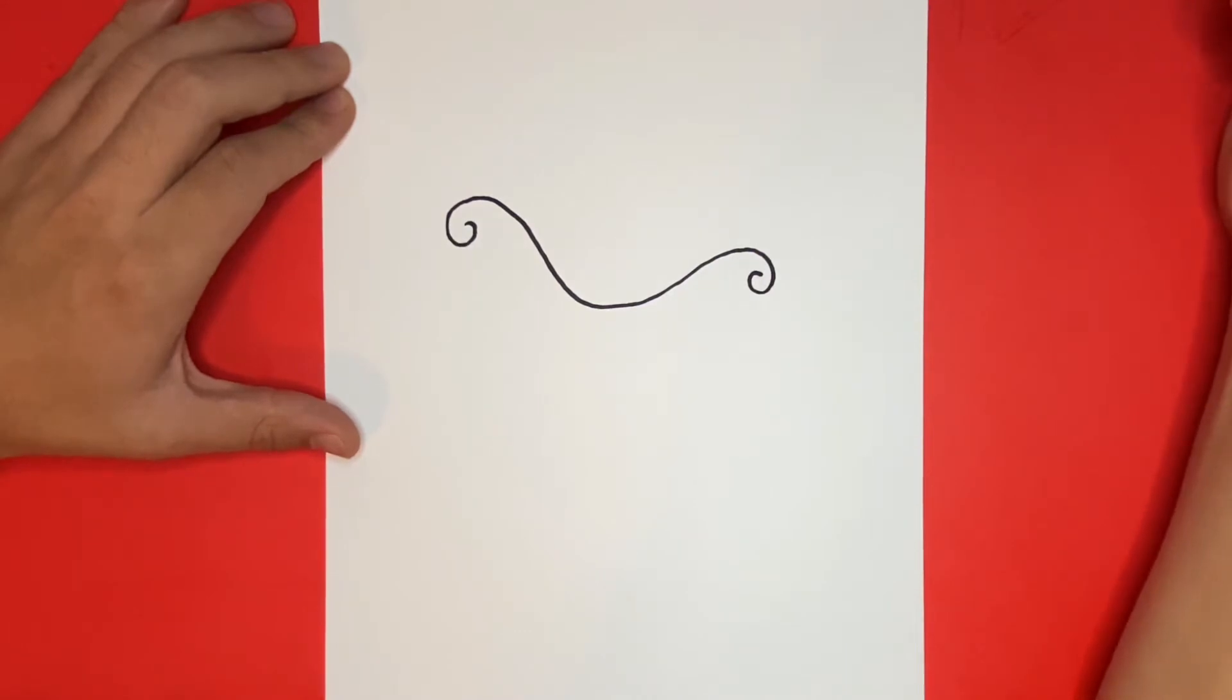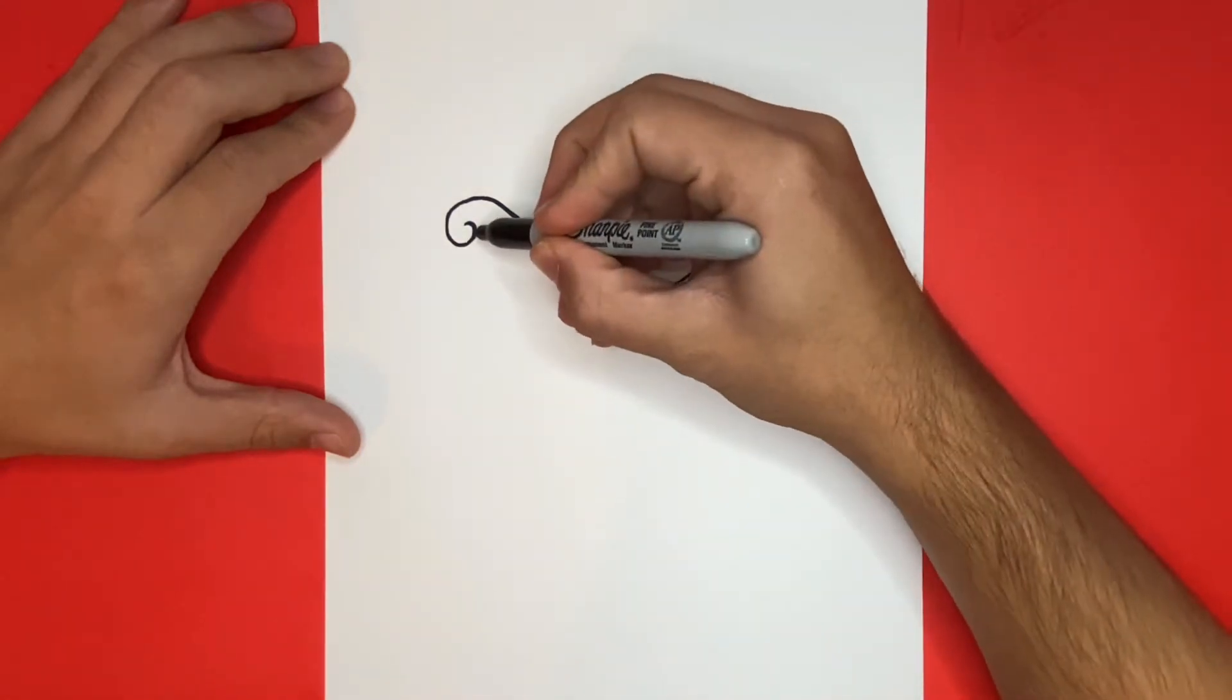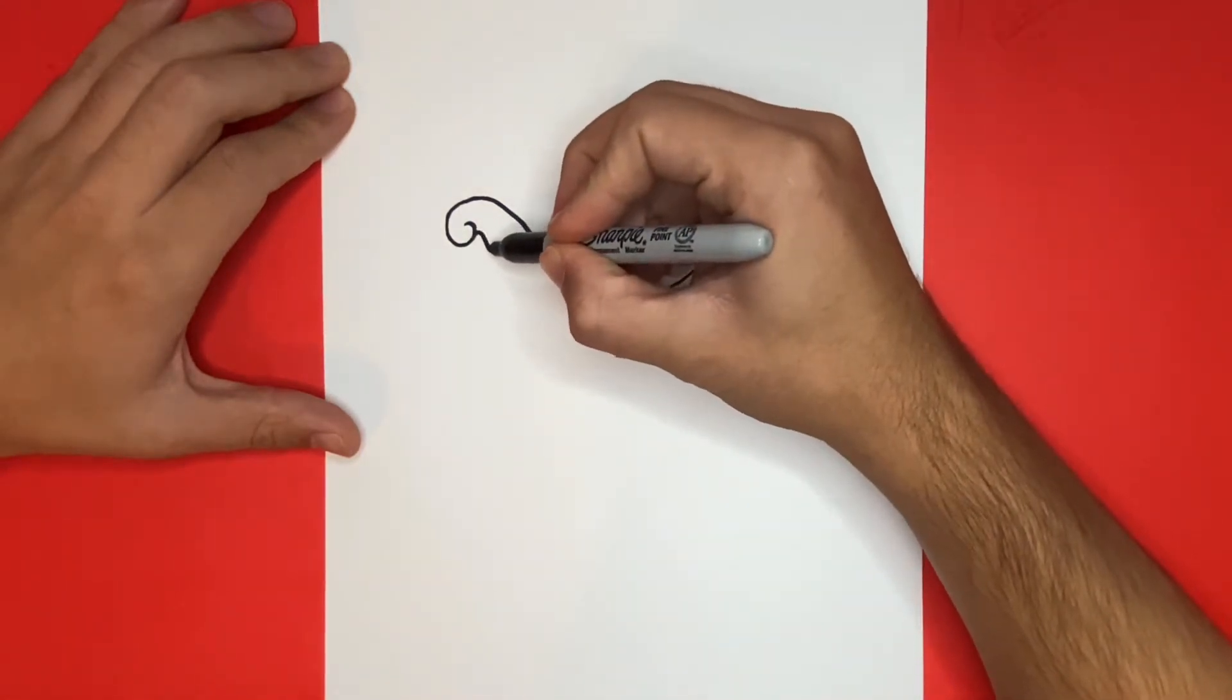Now on the left hand side at the end point of the swirl we're going to draw a curvy line going straight down followed by a straight line going across to make a shape that looks similar to a curvy L.